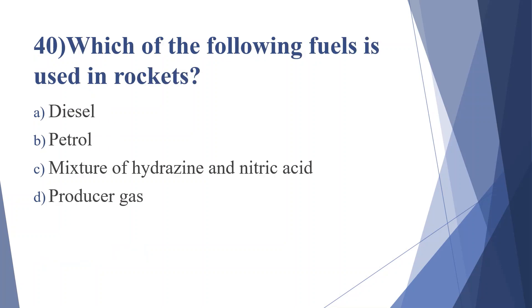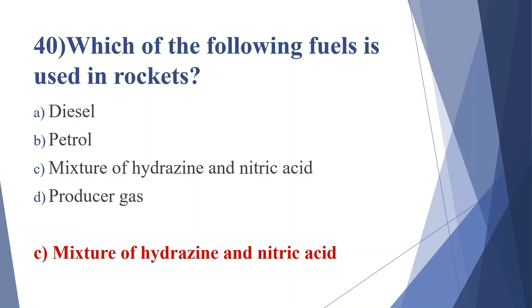Fortieth question: which of the following fuels is used in rockets? Option A: diesel, option B: petrol, option C: mixture of hydrazine and nitric acid, option D: producer gas. Answer is option C, mixture of hydrazine and nitric acid.